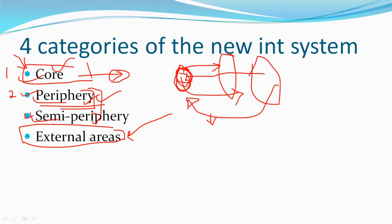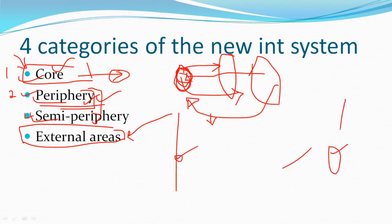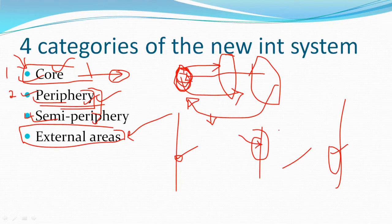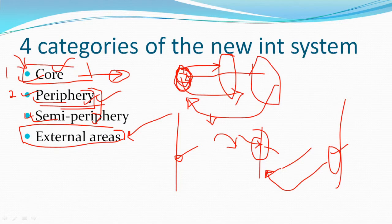Between the core and the periphery lies the semi-periphery. Semi-peripheral countries are either former core nations now in decline, or peripheral countries improving their position. Semi-peripheral countries want to improve their relative position in the world economic system. The best examples of declining cores that became semi-peripheries are Portugal and Spain. Other semi-peripheries include Italy, southern Germany, and southern France.